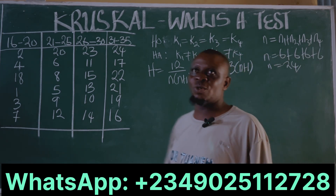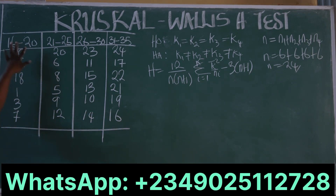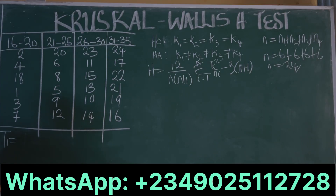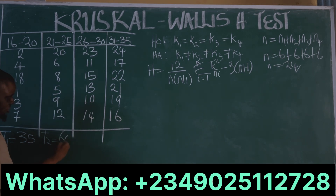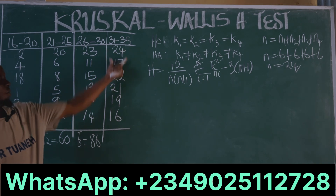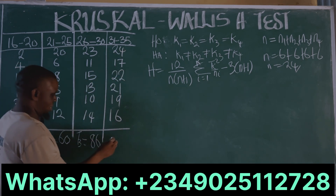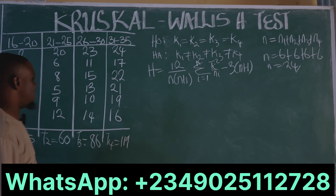With N = 24, we proceed to sum the ranks for each group. The sum of the ranks of group 1, T1, is equal to 35. The sum T2 is equal to 60. The sum T3 is equal to 86. And T4 is equal to 119.